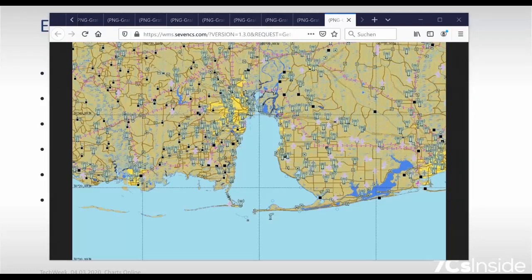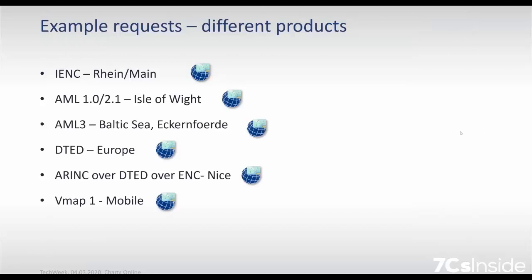One of the questions that came in: does chart server provide complete layers of data, or can we filter layers, like by dangers, anchorage areas, or different safety contour settings? You always have to define a layer, and within one layer you can filter for certain objects. So the filtering is quite scalable.